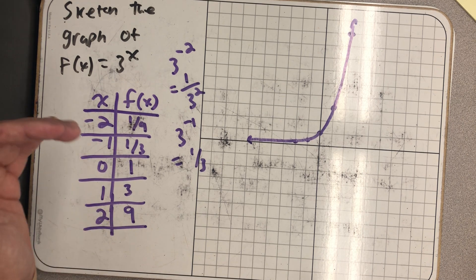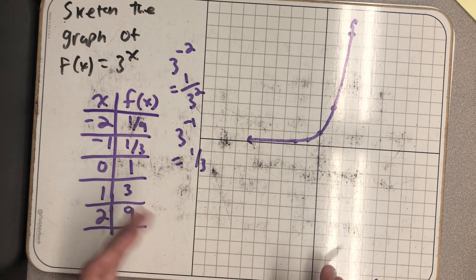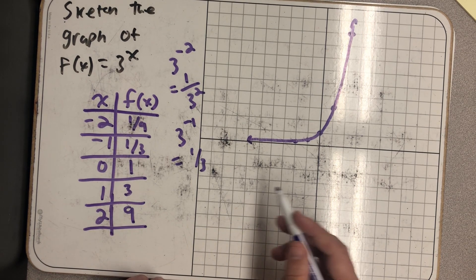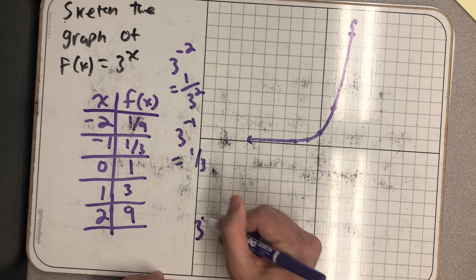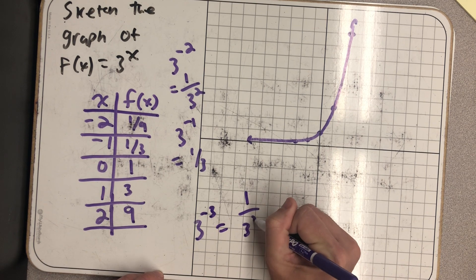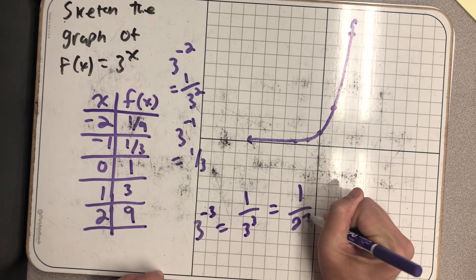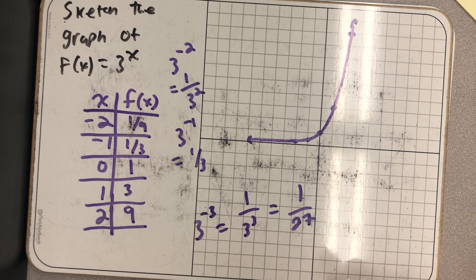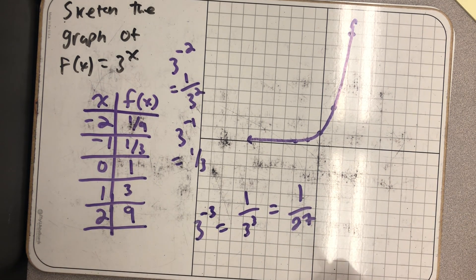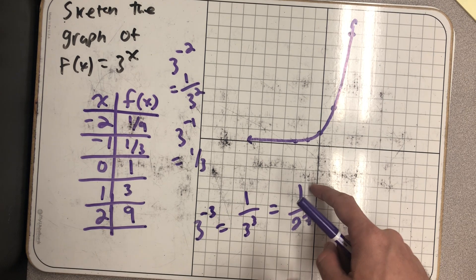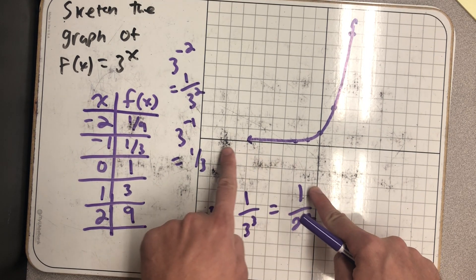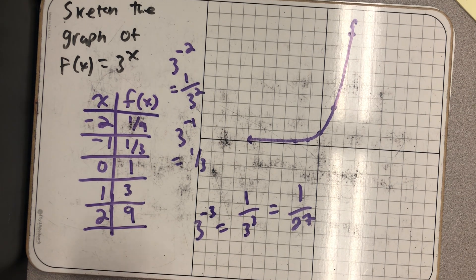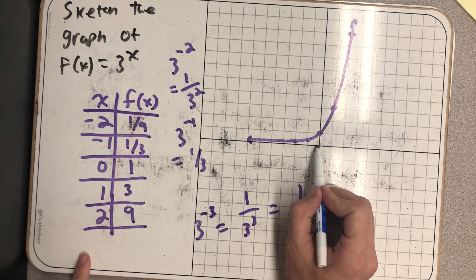So if I think about putting in smaller and smaller values of x, things further and further to the left on the x-axis, like 3 to the -3rd, well that would be 1 over 3 to the 3rd, 1/27. As I keep raising the bottom of the fraction to larger and larger power, the fraction's going to keep decreasing. But I'll always have a positive number over a positive number, so it's always on top of the x-axis, making the x-axis a horizontal asymptote.